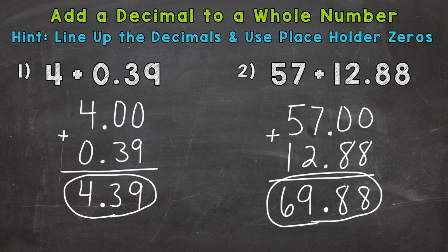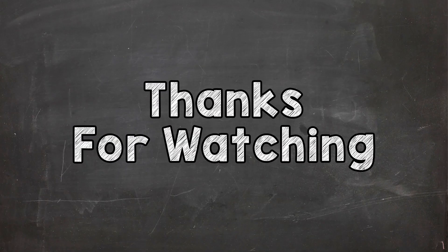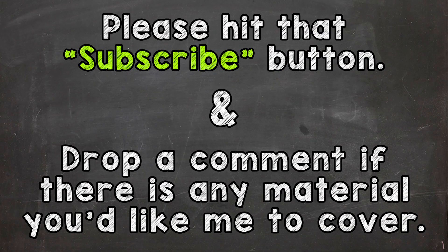So there you have it. There's how you add a decimal to a whole number. Line up your decimals, use placeholder zeros, and then add. I hope that helped. Thanks so much for watching. Until next time, peace.